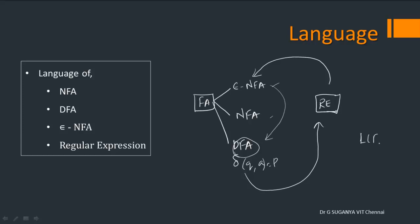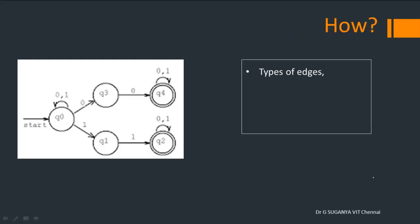The language of finite automata is always equivalent to language of regular expression. So coming to types of edges, you can see in this diagram. Yeah, if you look at Q0,